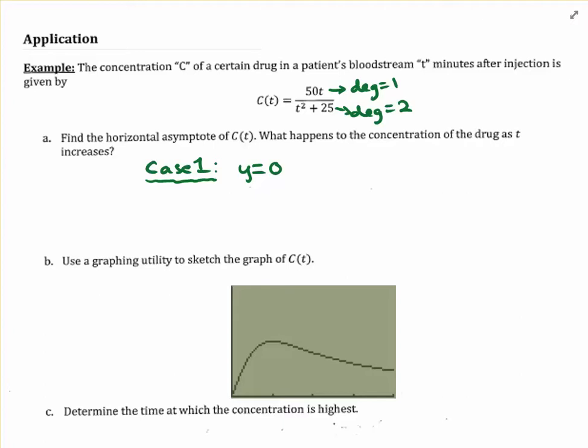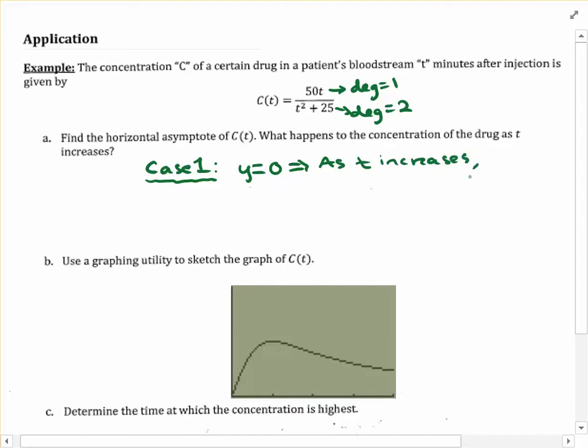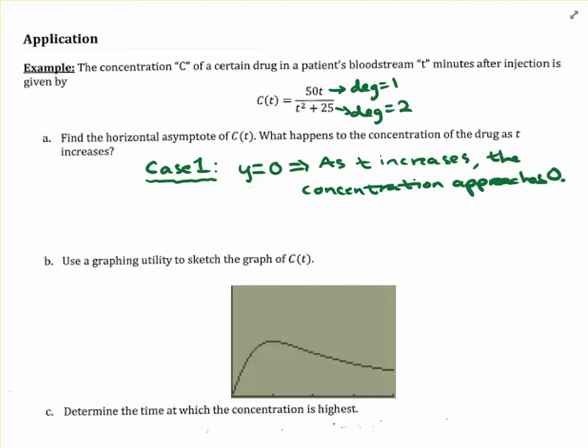But what does this really mean? Well, what this would mean is that as t increases, the concentration approaches 0. And that should probably make some sense, right? If we take an aspirin or a Motrin, we don't expect it to stay in our bloodstream forever. It metabolizes and our body gets it out of our system. So that would be the full answer to part A.